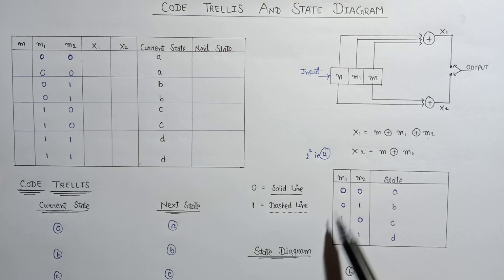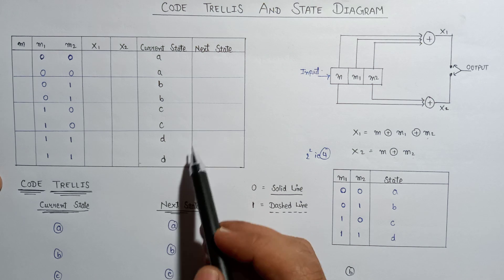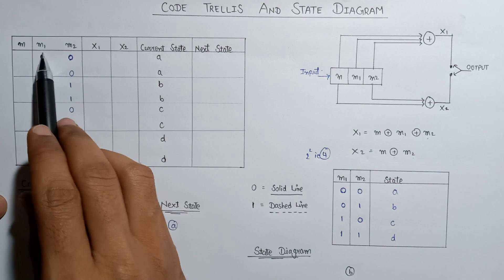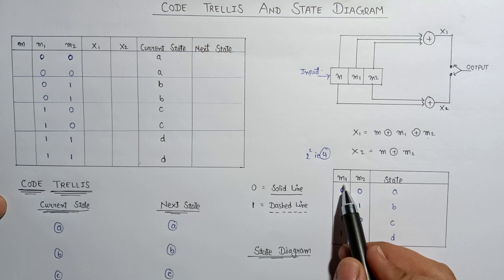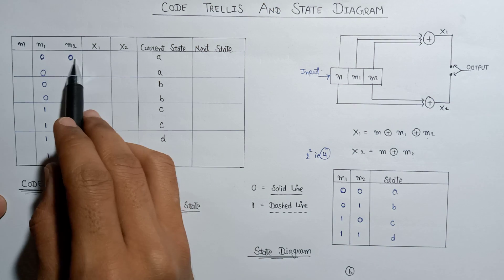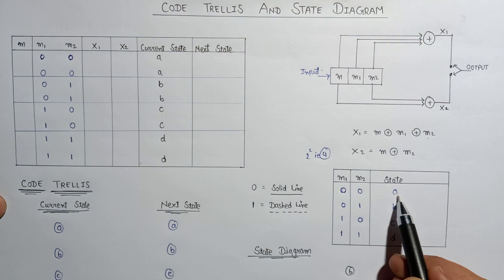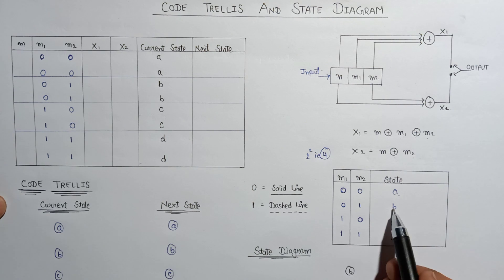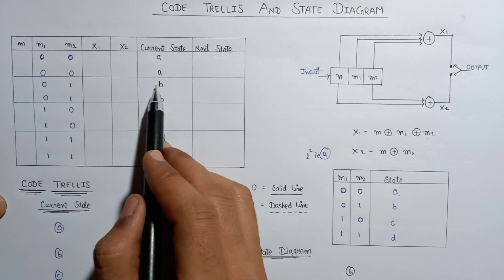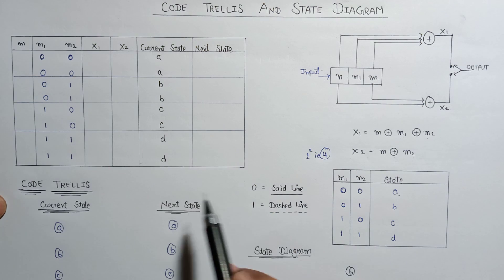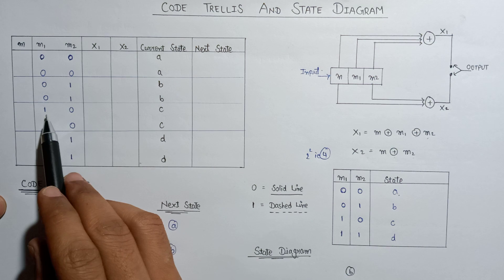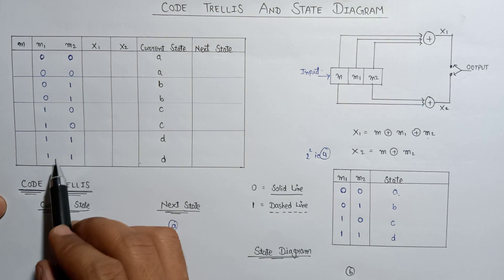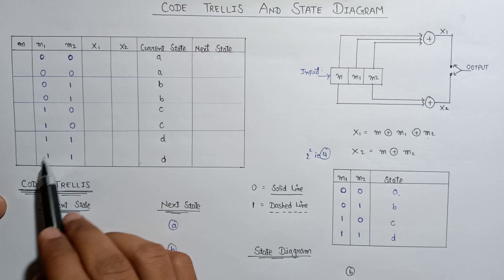Now let's obtain the state transition table. We will have a clear idea about the current state as well as next state. The m1 and m2 values determine the current state: if m1 and m2 is 00, the current state is A; 01 is representing state B; 10 is representing state C; and 11 is representing state D.